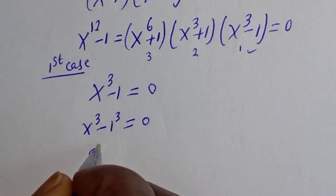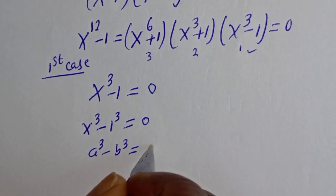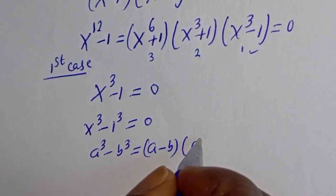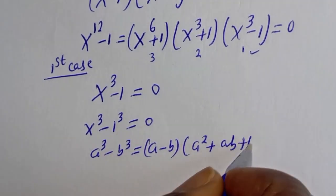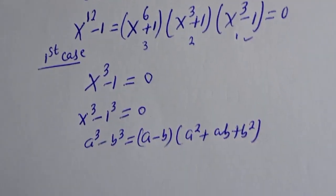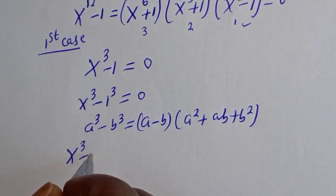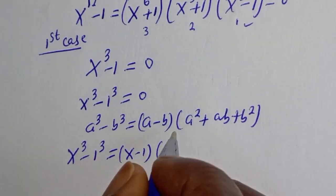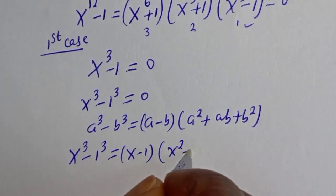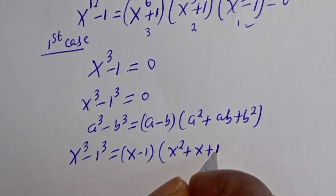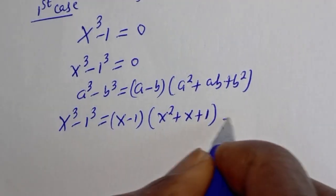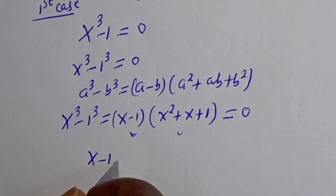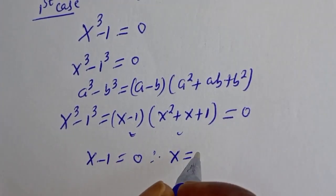If you have a cubed minus b cubed, this is equal to a minus b, bracket, a squared plus ab plus b squared. So s cubed minus 1 cubed factors as s minus 1, bracket, s squared plus s plus 1, equal to 0. From here, the first sub-case is s minus 1 equals 0, therefore s is equal to 1.